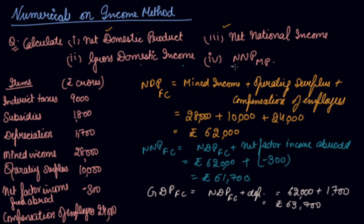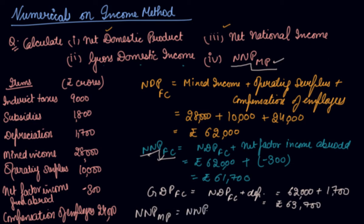Now they have asked you to find out NNP at MP. You already have NNP at FC. To go from FC to MP, you add back the net indirect taxes. So NNP at MP equals NNP at FC of 61,700, plus indirect taxes of 9,000, minus subsidies of 1,800. So you get an answer of Rs. 68,900.